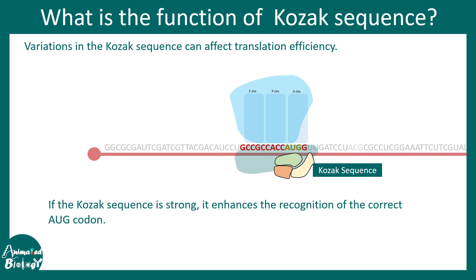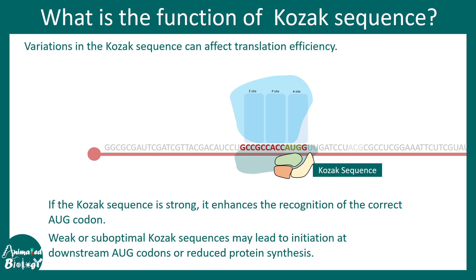It is important to note that various Kozak sequences may affect translation efficiency. If the Kozak sequence is strong, it enhances recognition of the correct AUG codon. If it is weak, it might lead to initiation of translation from a downstream start codon, affecting proper translation. Like the Shine-Dalgarno sequence, the Kozak sequence also ensures the precision of translation initiation.